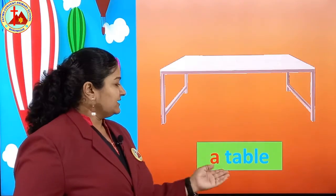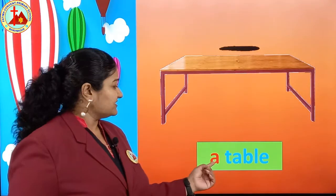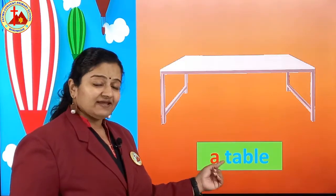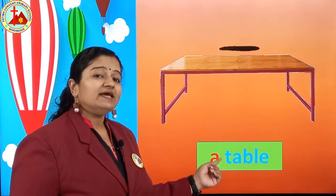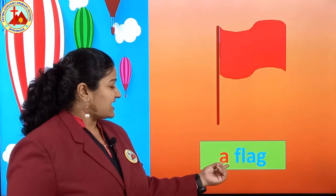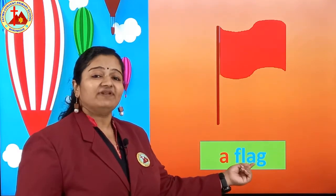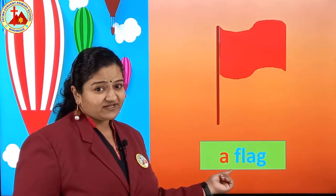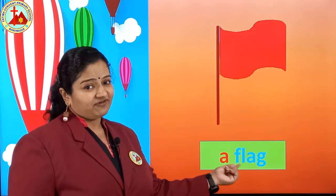Table. T, A, B, L, E — table. First letter is T. T is not a vowel, then we put A. Flag — flag spelling starts with F. F, L, A, G, flag. F is not a vowel, so we put A: a flag.